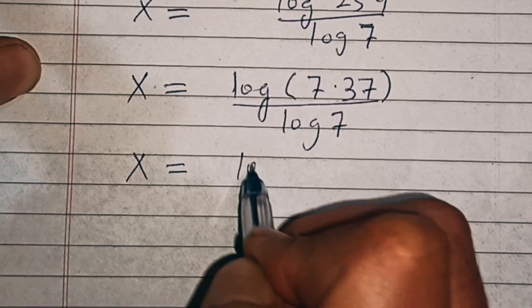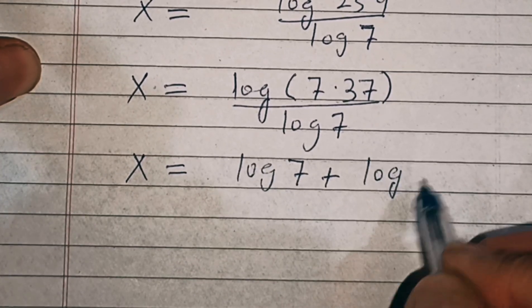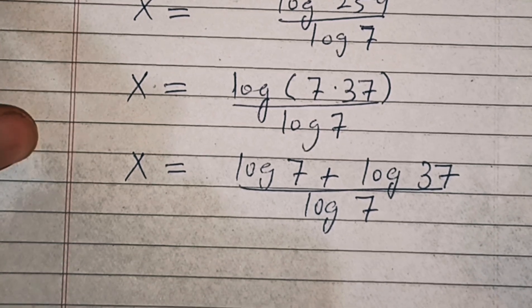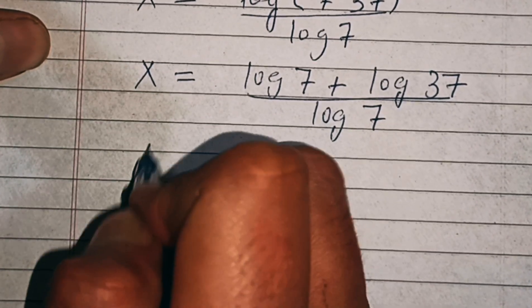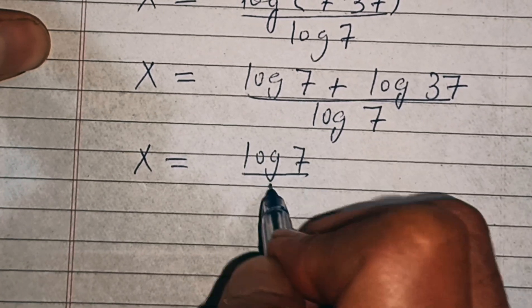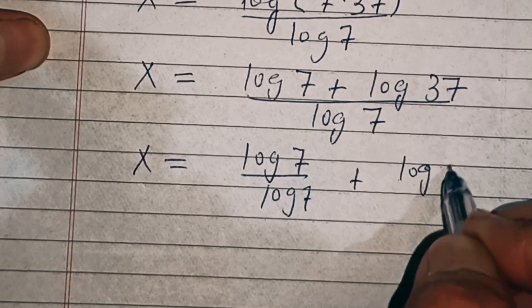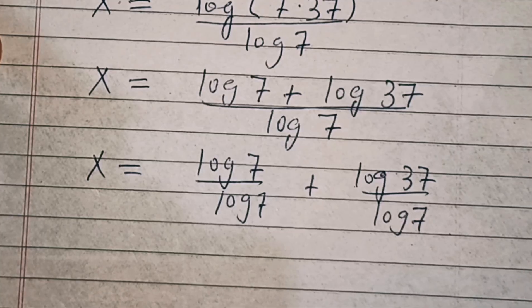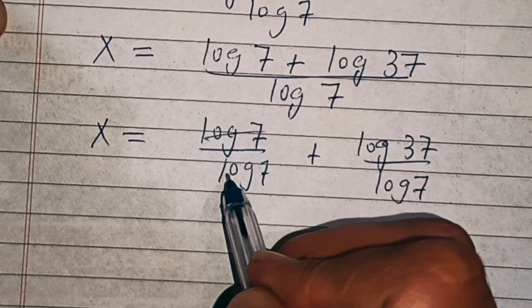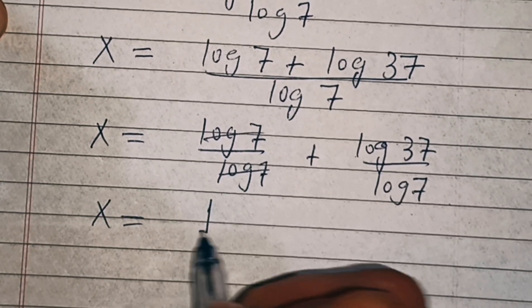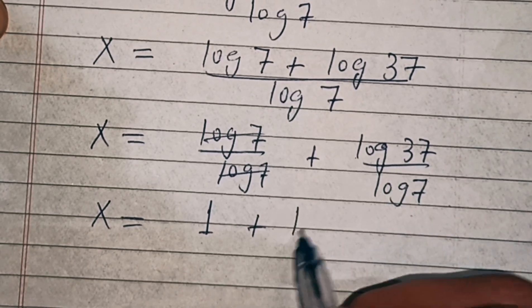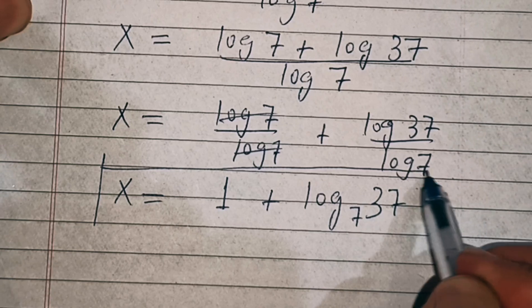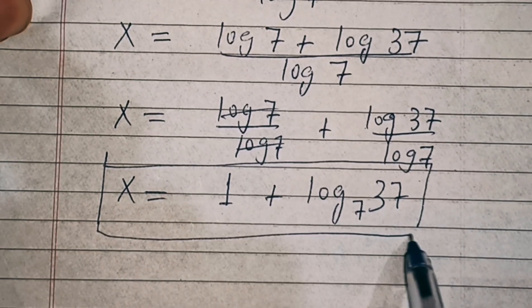So we have x equal to log of 7 plus log of 37 over log of 7. The log 7 in the numerator and denominator cancel out, giving us x equal to 1 plus log of 37 over log of 7, which is the same as 1 plus log base 7 of 37. This is our final answer. Thanks for watching!